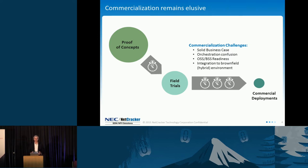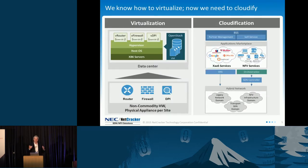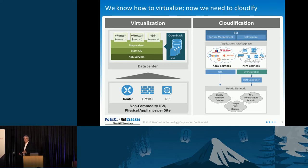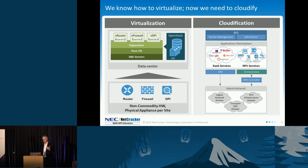This is why commercialization remains elusive. What do we need to do? Broadly speaking, the answer is in this term called cloudification — bringing functions and services from a focus on virtualization to a focus on the cloud. We know how to virtualize functions, how to take an appliance and virtualize it on x86 general-purpose hardware. That's the easy part. We spent the last three years proving out virtualization in a lab. What we need to do now is orchestrate those functions and tie an orchestrated function together with the existing OSS so that we can provision services across physical and virtual boundaries.